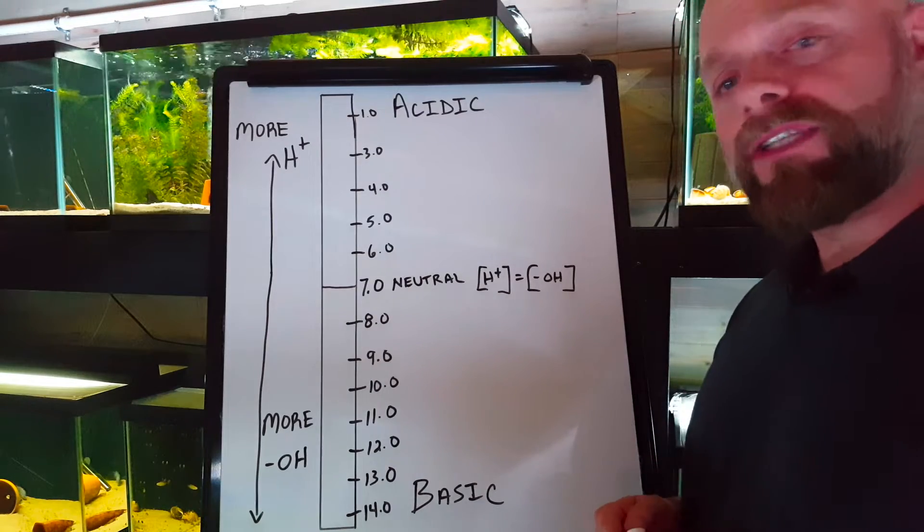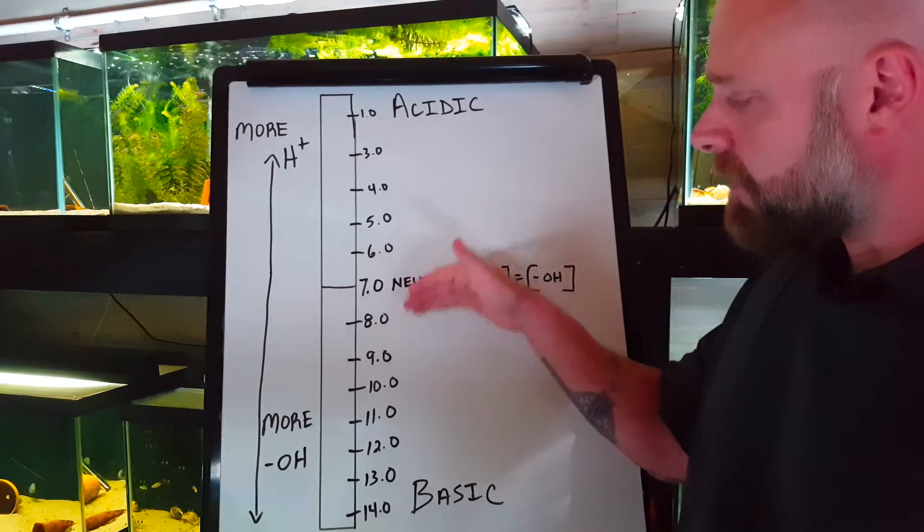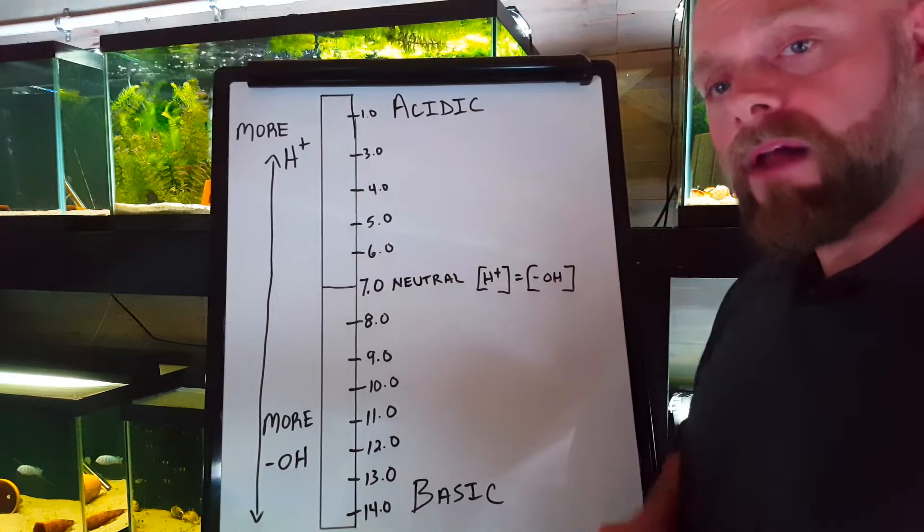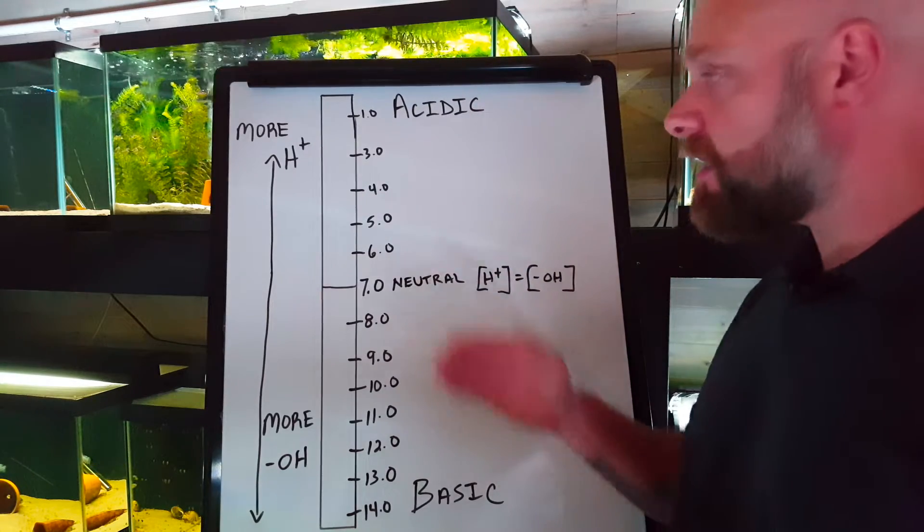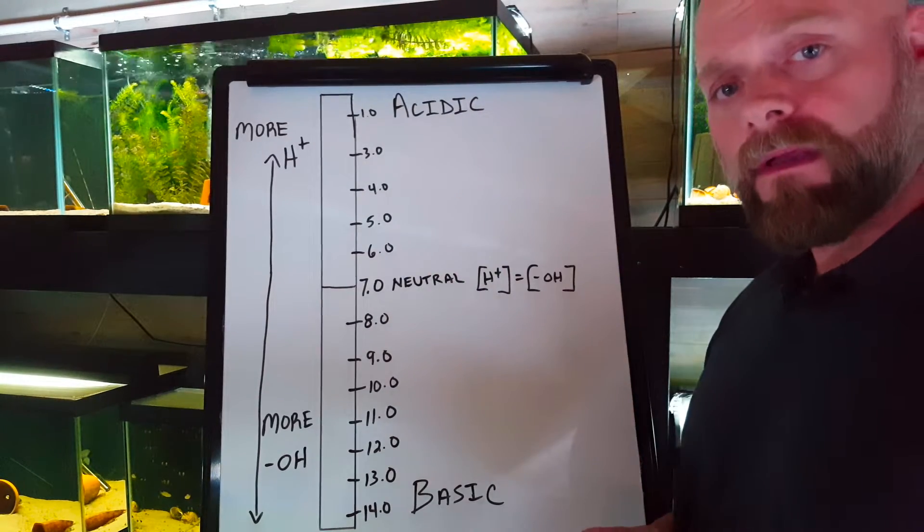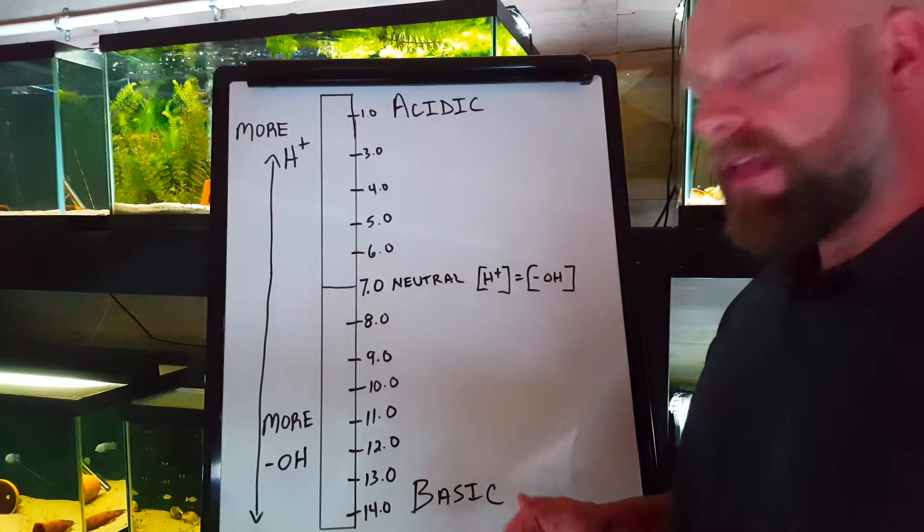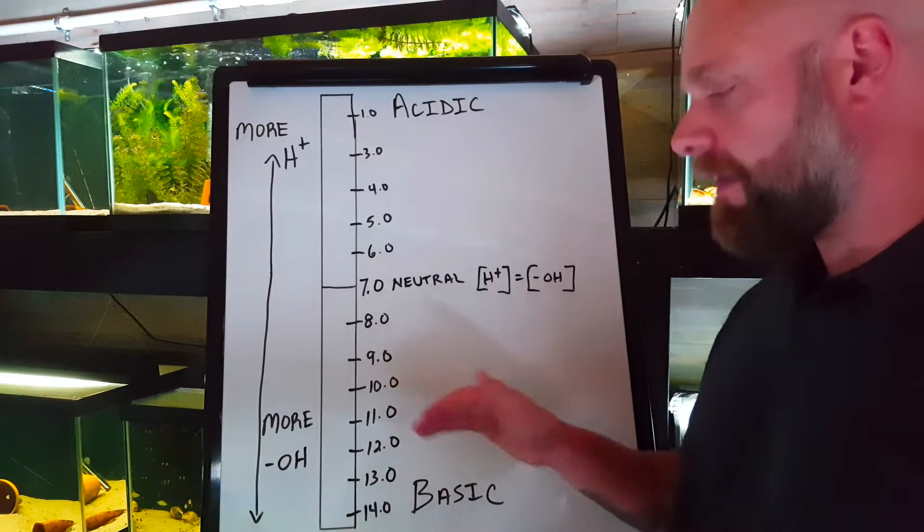If we go back to our pH scale, as the numbers on the pH scale get smaller, that solution is becoming more acidic. As the pH numbers get larger, that solution is becoming more basic.